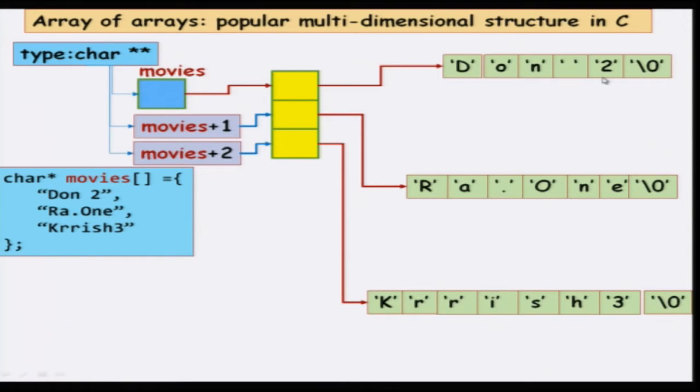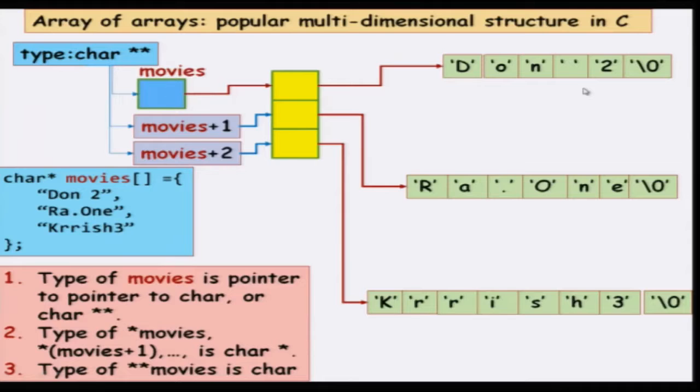Here you see the distinct advantage of this kind of representation over 2D matrices. In 2D matrices, the number of columns was fixed — that is how the pointer arithmetic worked. Here, the number of columns in one row can be different from the number of columns in another row. So this representation is actually more useful when you have what are known as ragged arrays, where one row and the next row may have very different lengths. This is a natural situation for storing strings when you need such a facility. The type of the variable movies is a pointer to a pointer to character, or char**.